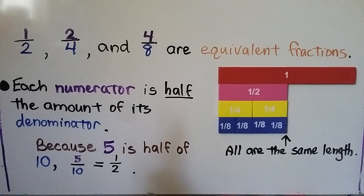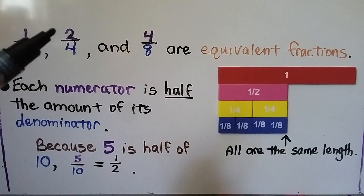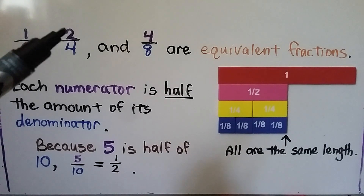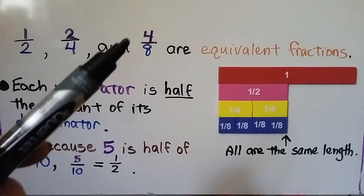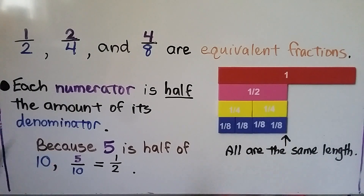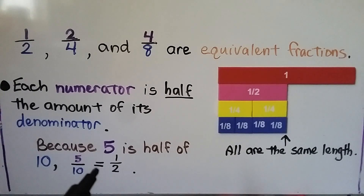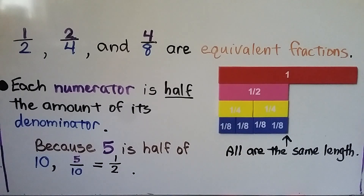Each numerator is half the amount of its denominator. We have one for a numerator and two for a denominator — one is half of two. We have two for a numerator and four for a denominator — two is half of four. We have four for a numerator and eight for a denominator — four is half of eight. And because five is half of ten, five-tenths is equal to one half. That's also an equivalent fraction to these.